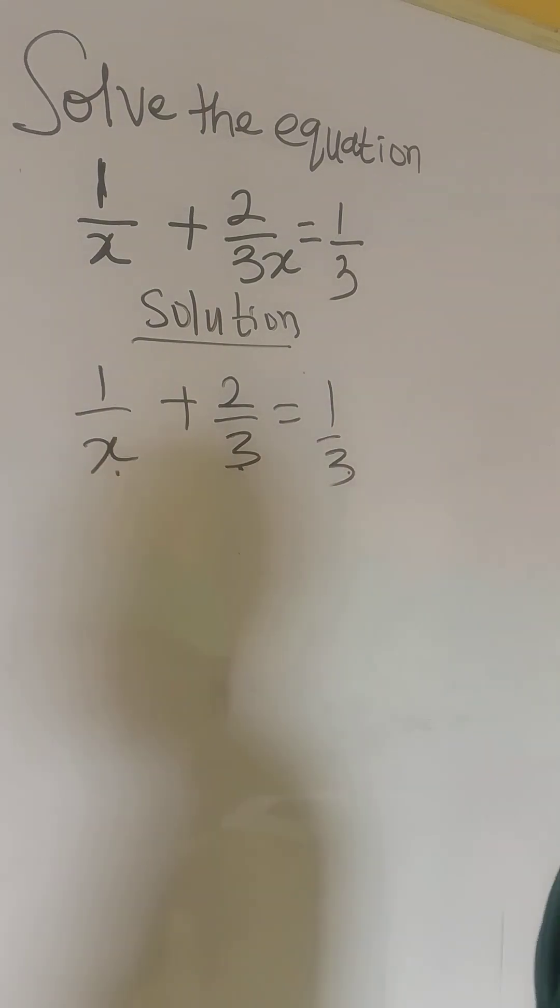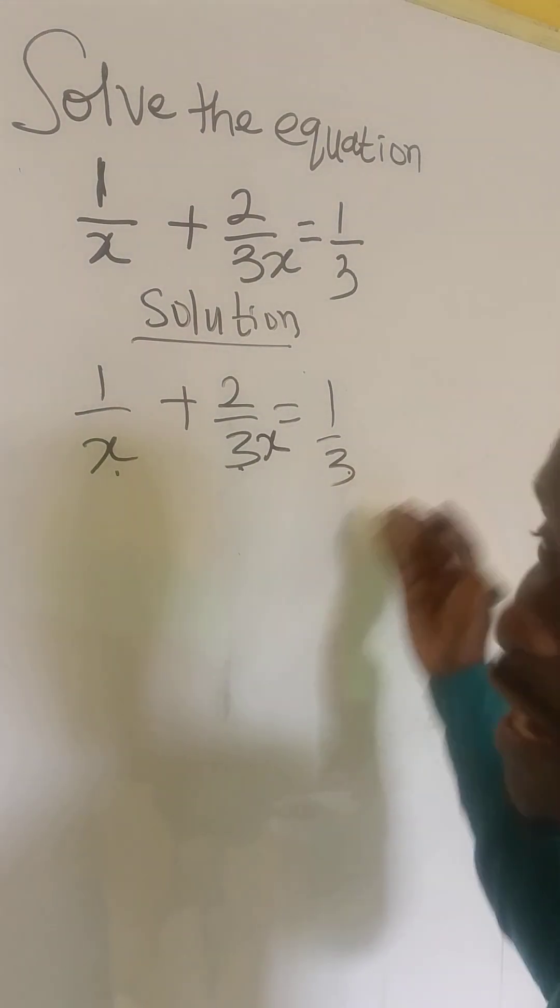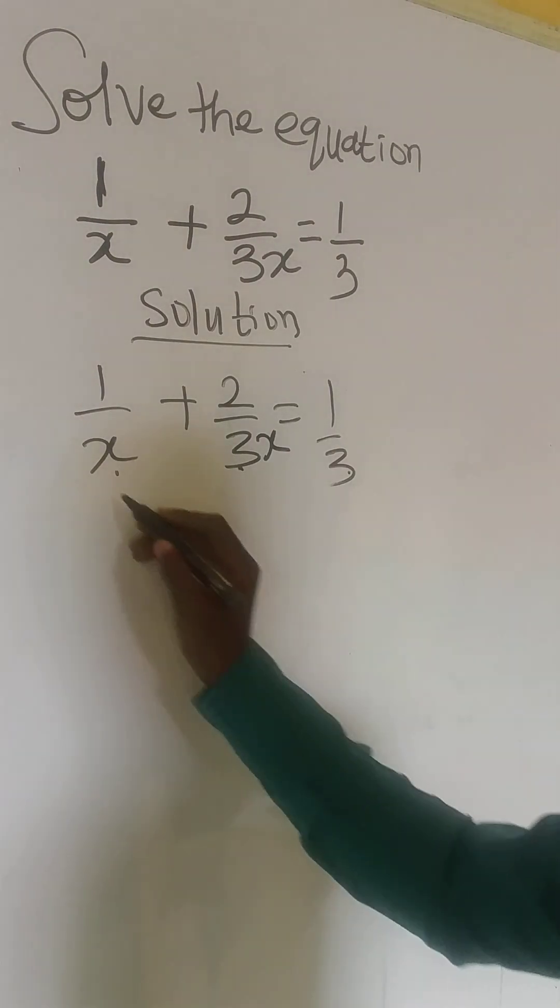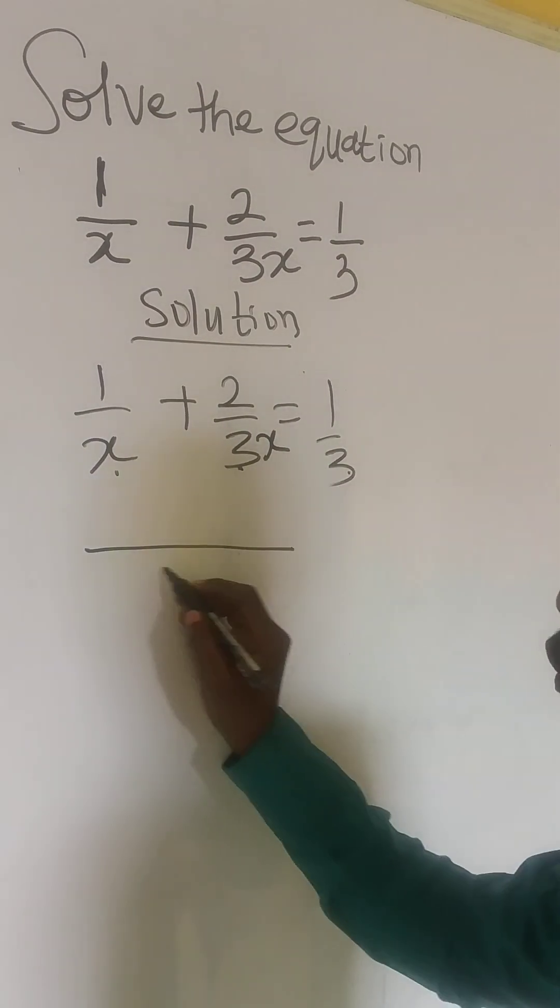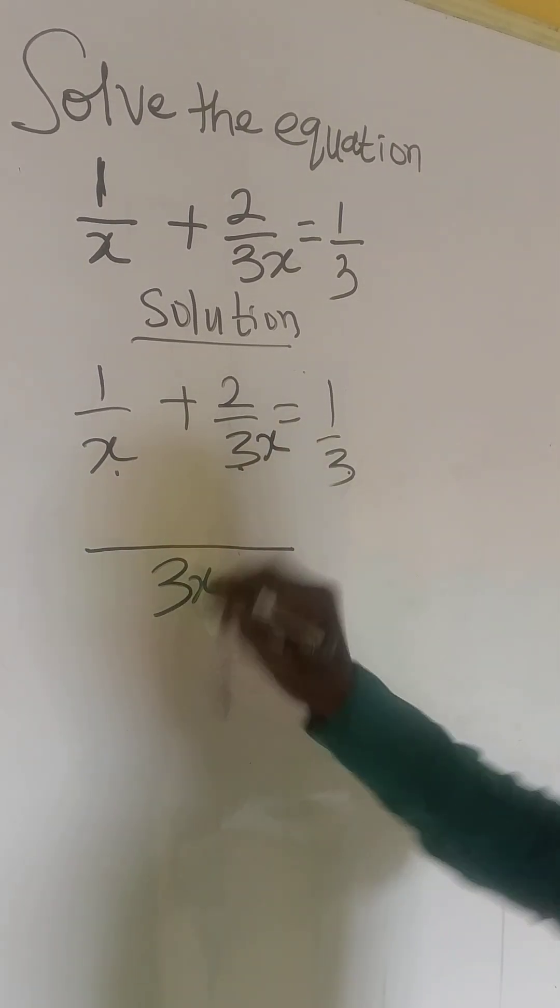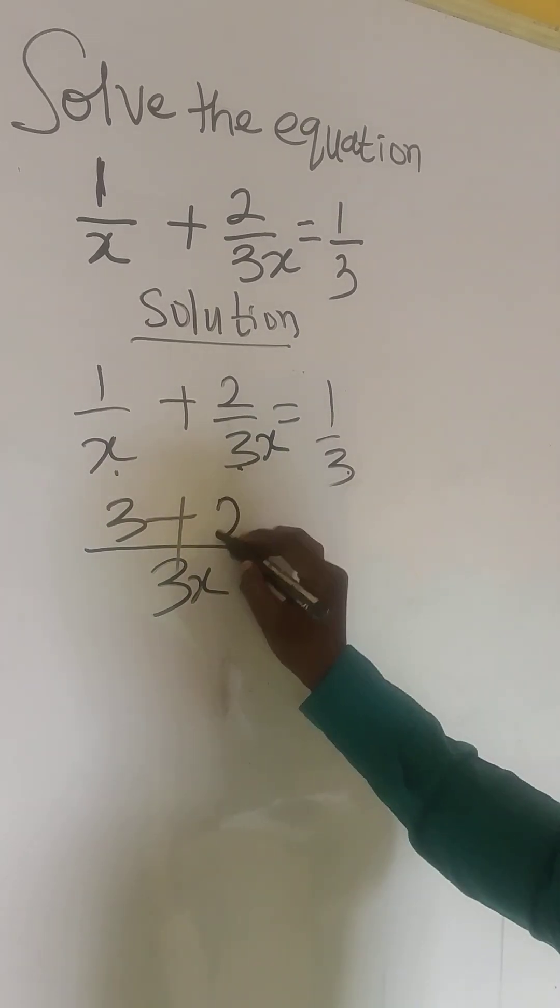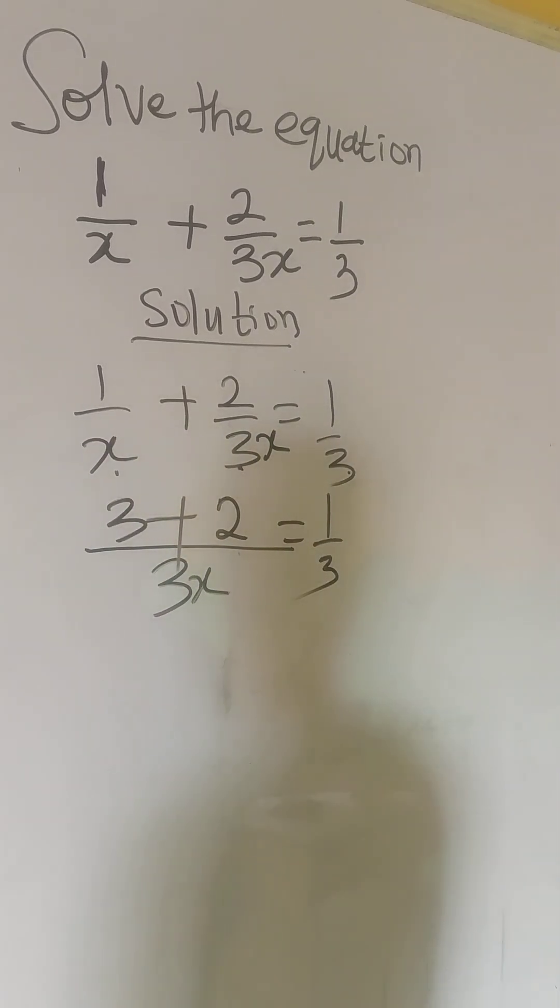You can use two methods. You can either multiply through by the LCM or you just find the LCM of these two, which is 3x. 1 over x plus 2 over 3x equals to 1 over 3. We have 5 over 3x equals to 1 over 3.